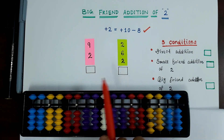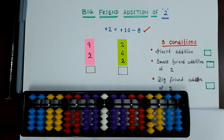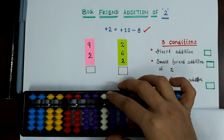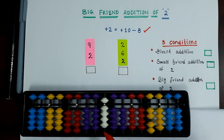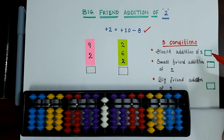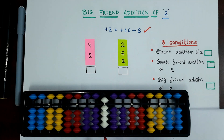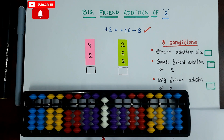Here we have two examples. The first example is 9 plus 2. For addition of 2, we have to check these 3 conditions. The first condition is direct addition of 2. Can we add 2 directly here? No, because we don't have the required number of bits available here. So direct addition of 2 is not possible.